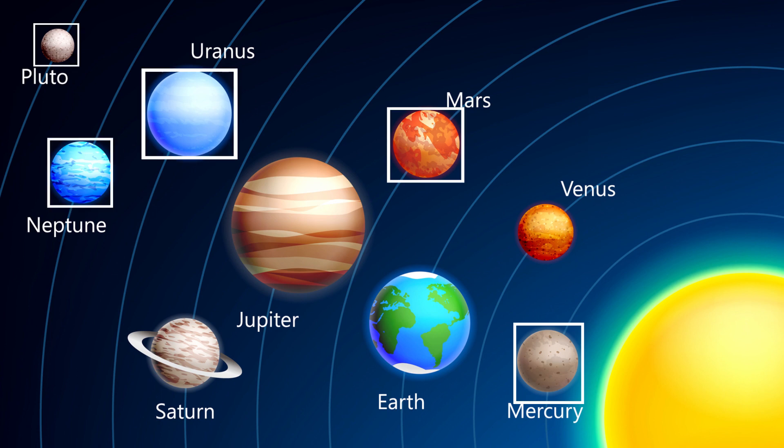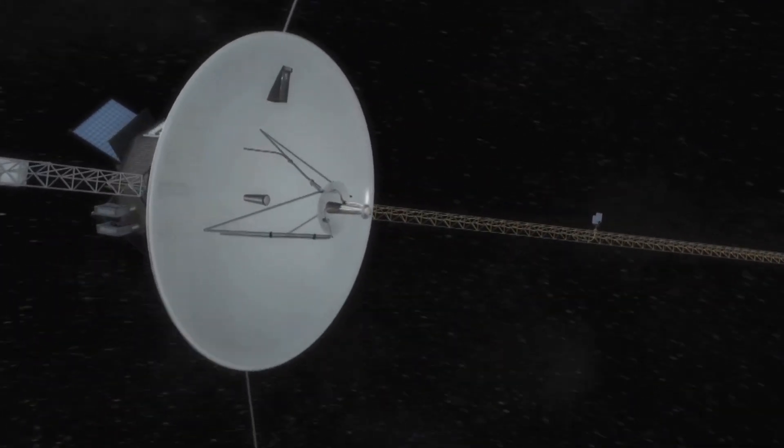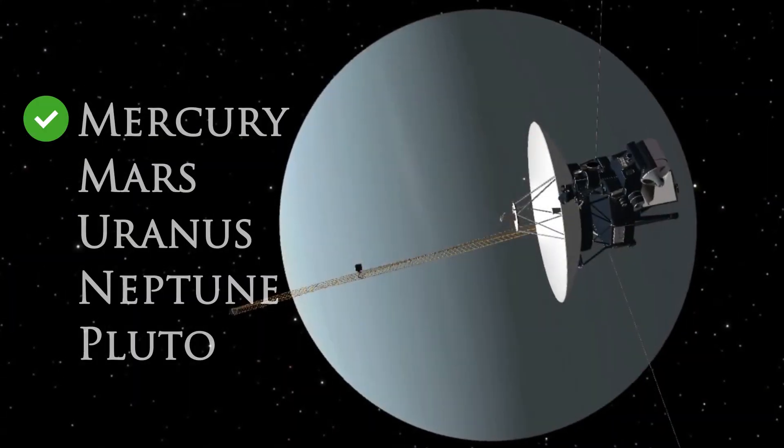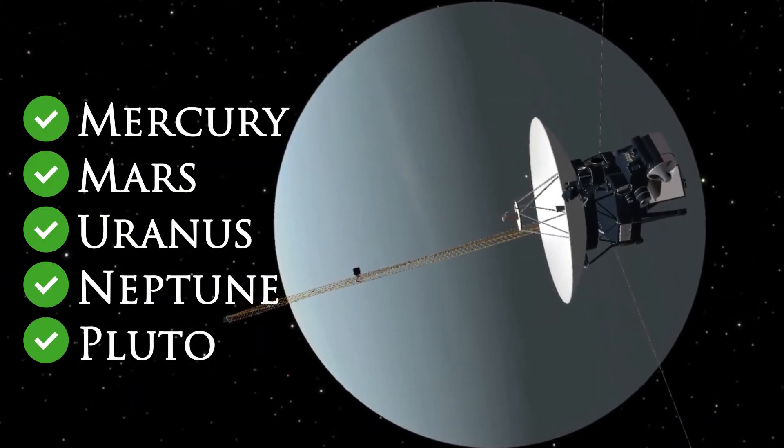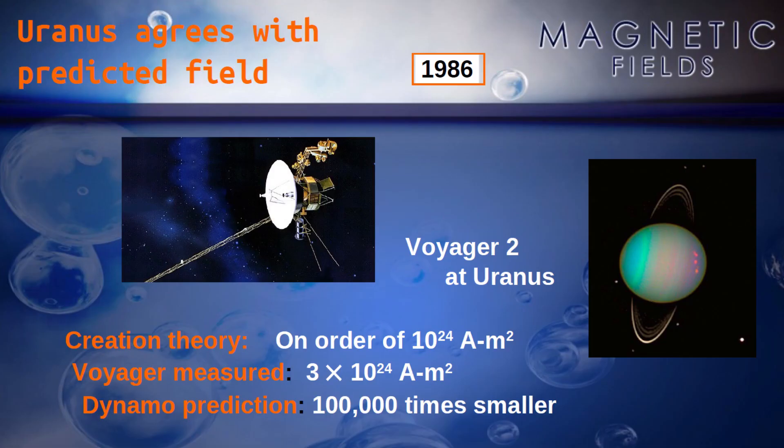Then, years after Dr. Humphreys made his predictions, NASA space probes reached these planets and took measurements of their magnetic fields. The results? It turns out that Dr. Humphreys' predictions were right on, and the expectations of NASA, based on the evolutionary dynamo theory, were drastically off. Even with a magnetic field being 100,000 times smaller than expected.